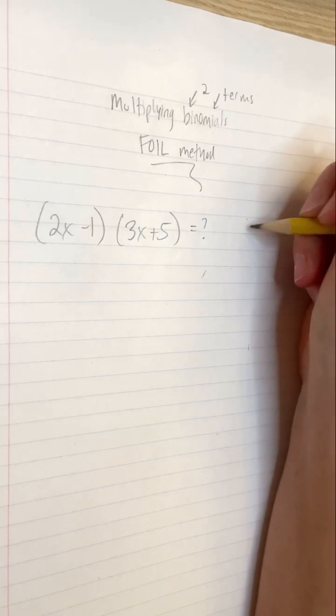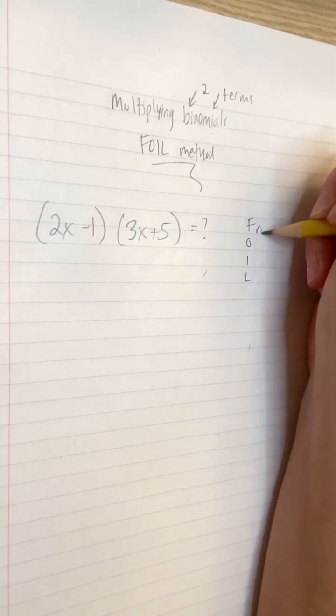For example, 2x-1, or 3x+5. How would you multiply these together?